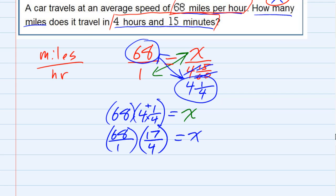And before we multiply, we always want to look to see if anything cancels. And in this case, the four goes into four once. The four goes into 68, actually 17 times.